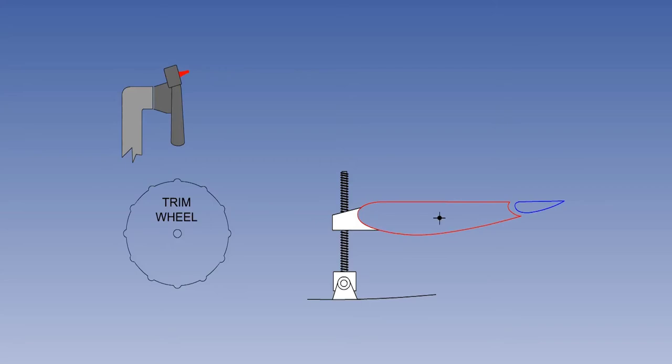You can see that the trim input controls in the cockpit are the same, but now pitch trim is accomplished by changing the incidence of the whole tailplane. As before, for pitch control, an elevator mounted on the trailing edge of the tailplane is still used.